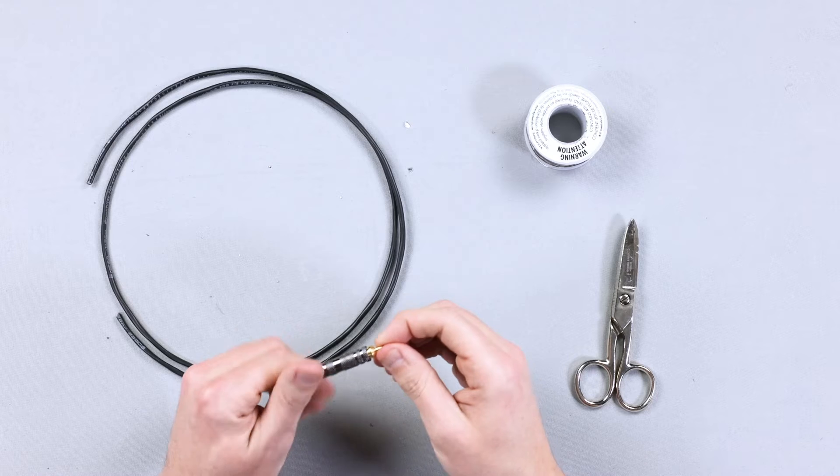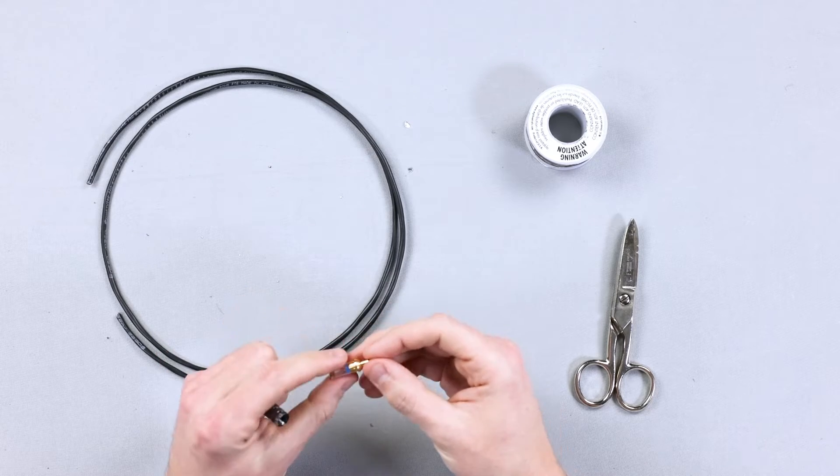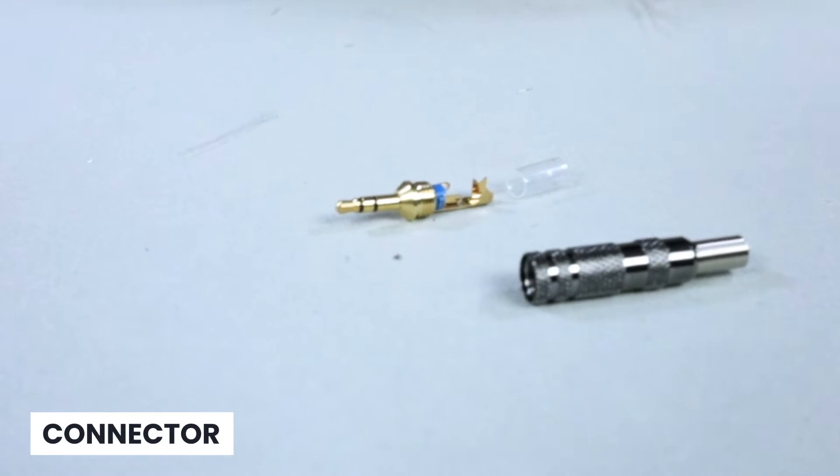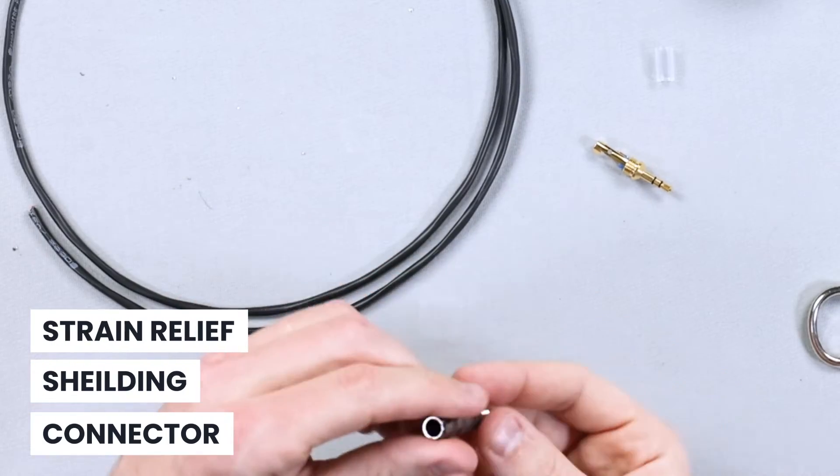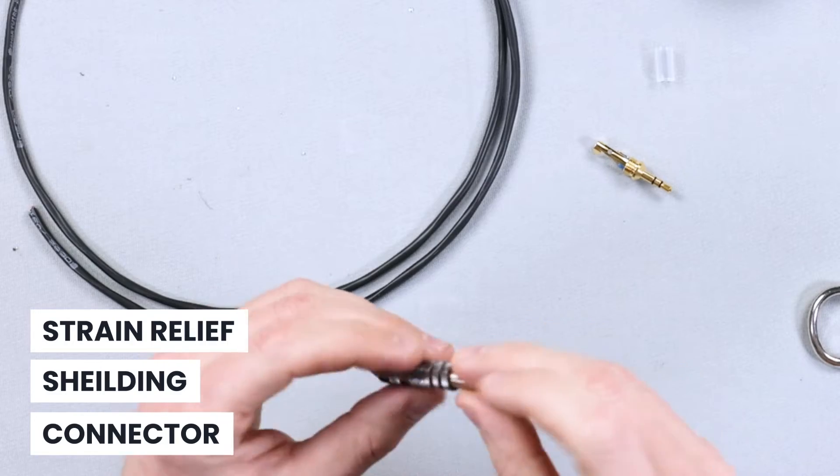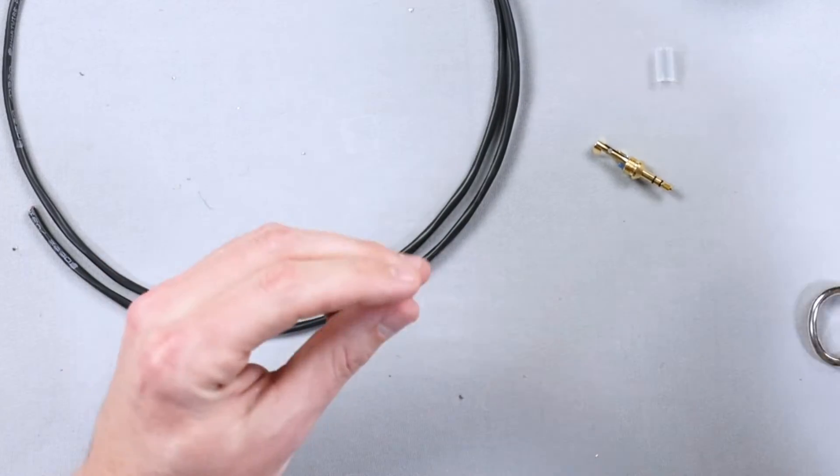The connector is made up of four different parts. You have the actual connector itself, you have this shielding, then you have the strain relief, and then I don't remember what this part is called. I think it was bushing on the last video.